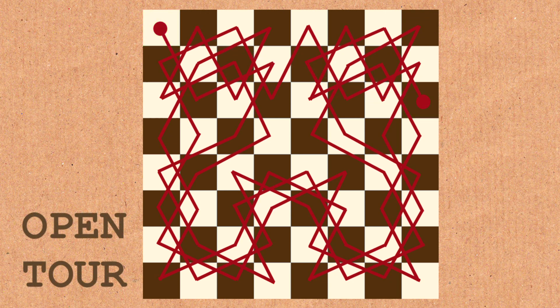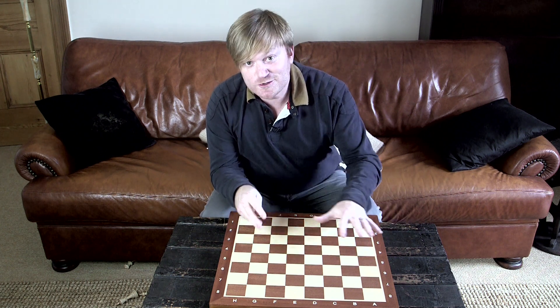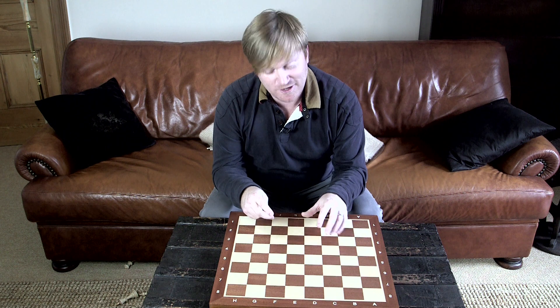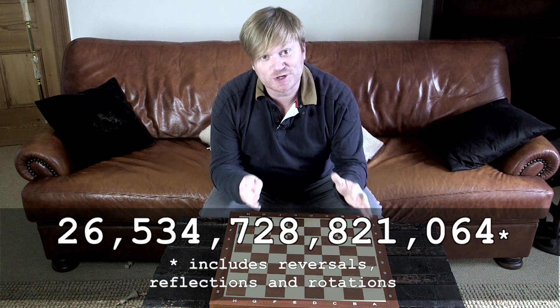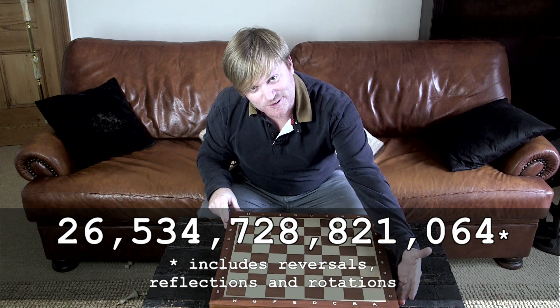Now closed or open, you'd think this would be something that's pretty rare, right? Well it's not. That closed tour, the first one we showed you, there are 26 trillion different ways to do it on an 8x8 chessboard.